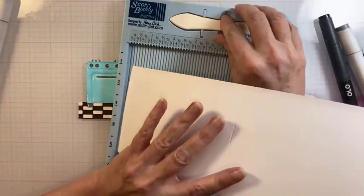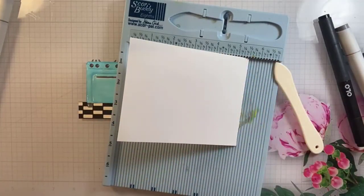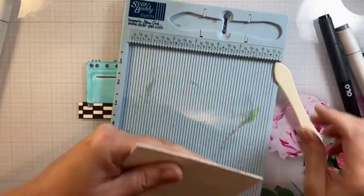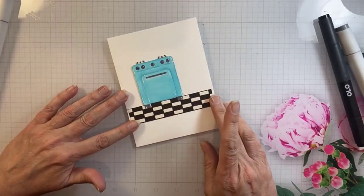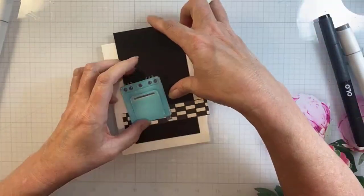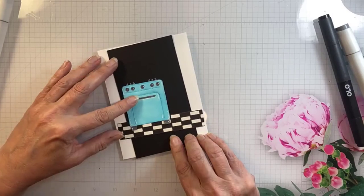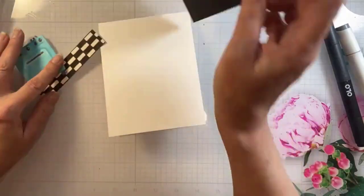So now I'm taking one of my pre-cut and scored top folding A2 cards and that will be my card base and while it looks really cute on that clean background I just think something about that black piece of cardstock really makes the oven pop so I am going to keep that in there.